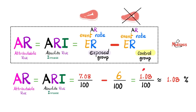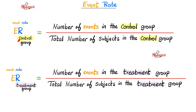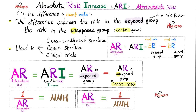If the attributable risk is 1 over 100, then the number needed to harm is 100 over 1. The event rate in the control group is the number of events in the control group divided by the total number of people in the control group. The absolute risk increase, also known as attributable risk, equals the event rate in the exposed group minus the event rate in the unexposed group. Flip the attributable risk and you get the number needed to harm.